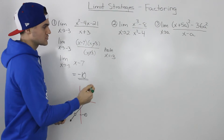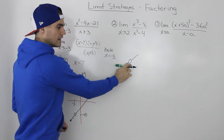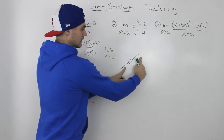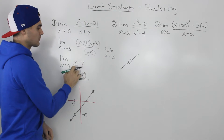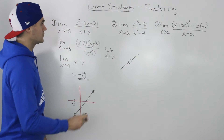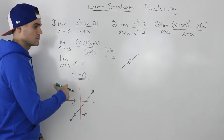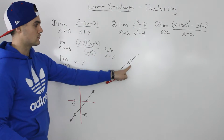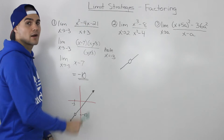That's the same pattern you're going to run into for any example where you use factoring to find the limit. When you factor expressions and cancel out terms, there's going to be a hole at that x value. The function is not going to be defined at that point, but it's going to approach a certain y value. To get that y value, just plug the x value into the remaining expression.